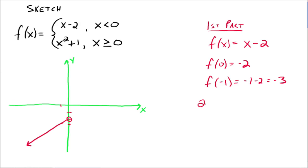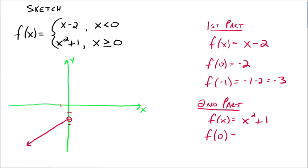Now let's look at the second part: f of x equals x squared plus 1. We want to see what's happening at the x value where things change, which in this case is 0. So f of 0 is equal to 1 — that's the ordered pair 0 comma 1. Now the question is, are we allowed to use this point? Yes, because we're allowed to use 0 for the second part of our function. So that ordered pair is definitely included and we'll put a solid dot.